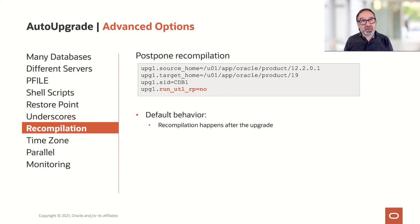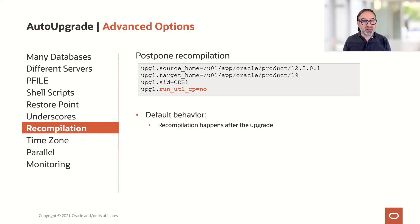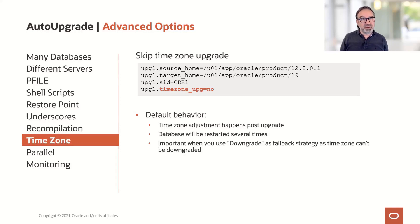Postpone the recompilation — that is also something which is in some cases quite useful. For instance, there are CPU architectures that give you a lot of virtual cores. We had cases with 64 virtual cores where the recompilation hammers in with 128 parallel jobs, even though you may have only eight real cores in the system, causing a massive overload. In such cases, it may be good to postpone the recompilation using run_utl_rp equals no, and then recompile by yourself. You could also skip the time zone upgrade using timezone_upg equals no.